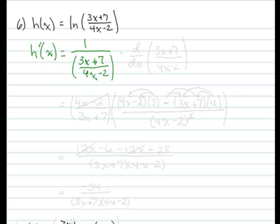That's the derivative of the outside, because the outside function here is natural log. Times the derivative of the inside, so let's use some notation here. We're going to take the derivative still of 3x plus 7 over 4x minus 2.